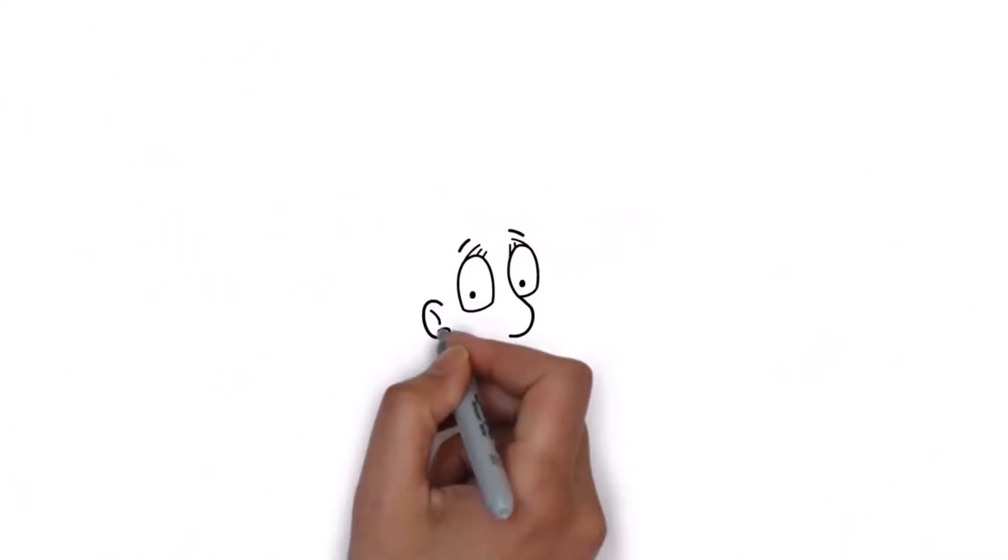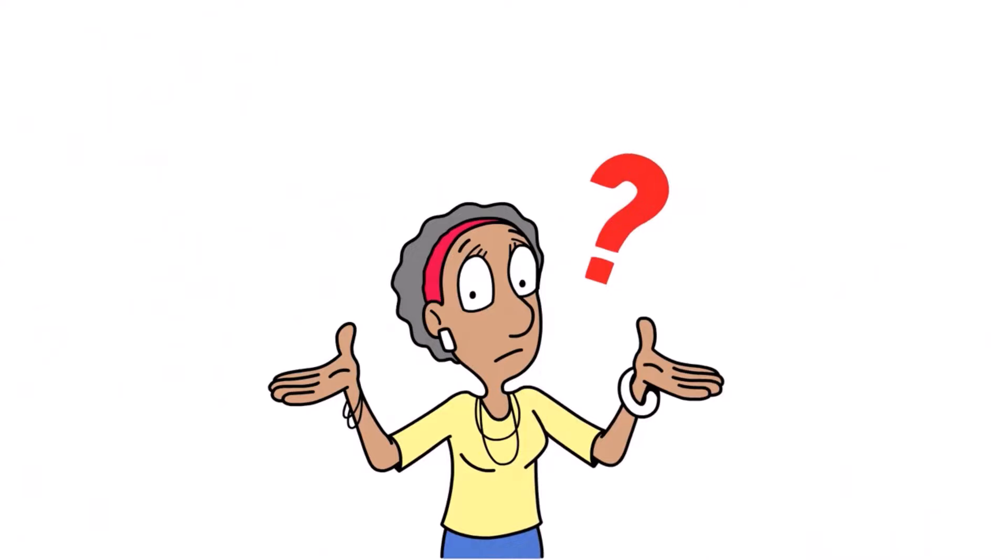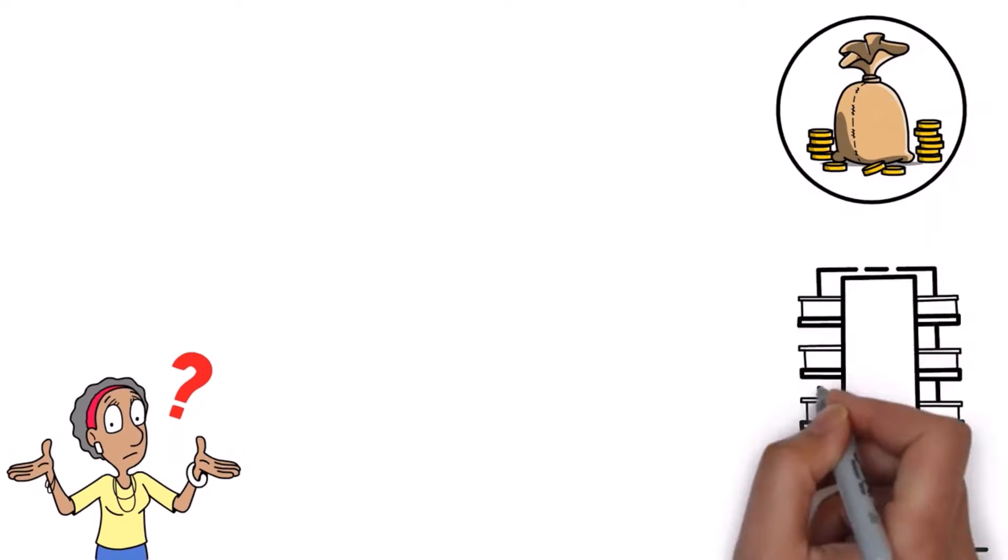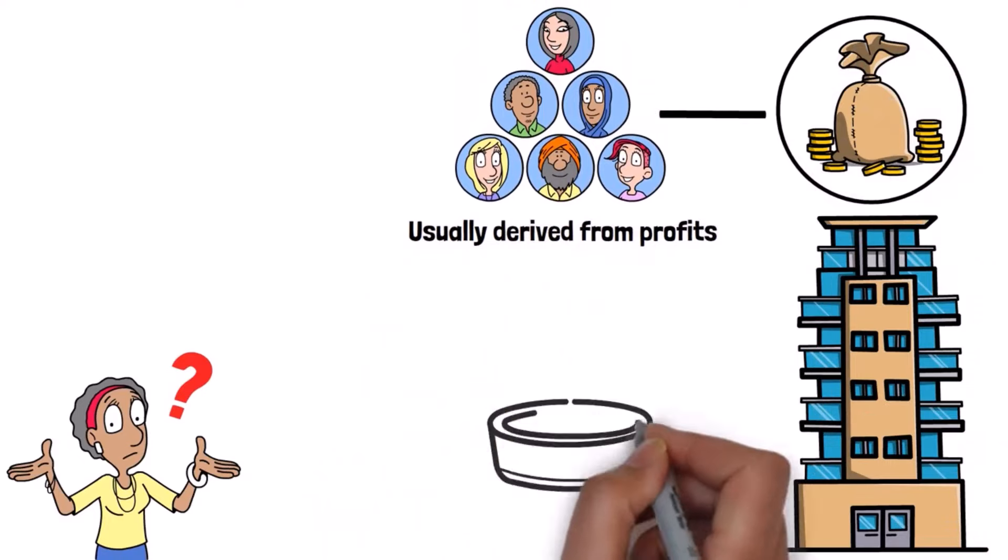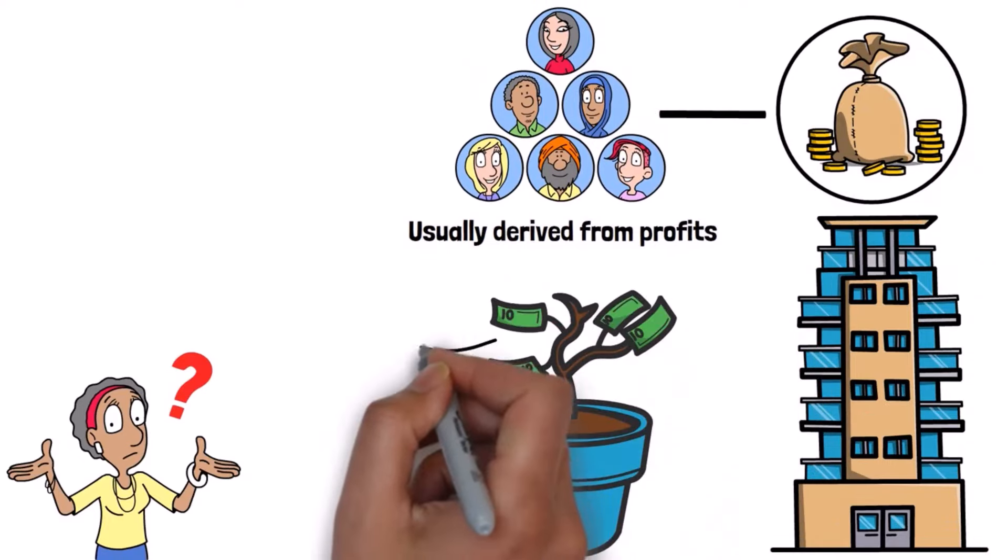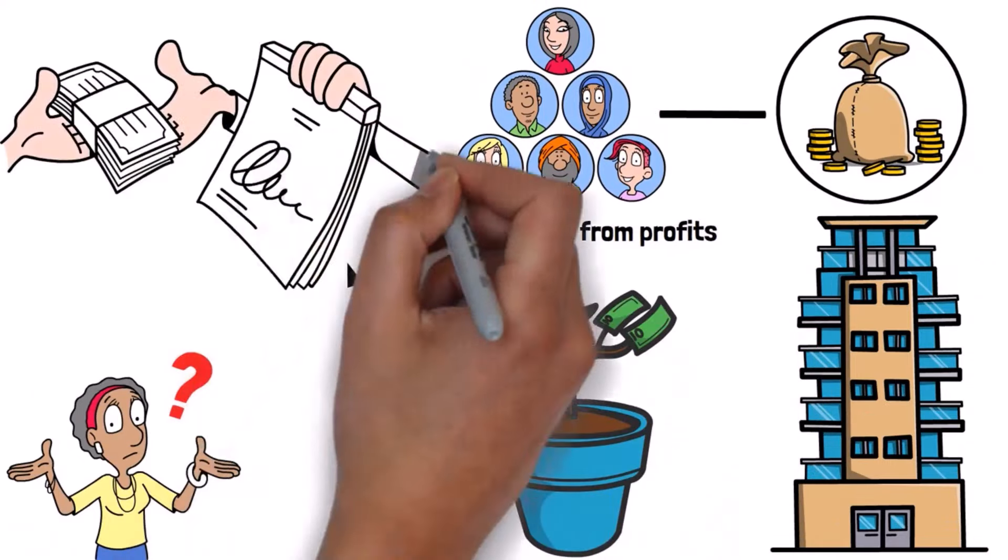First, let's talk about what dividends are. Dividends are payments made by a corporation to its shareholders, usually derived from profits. They can provide a reliable income stream, especially if you invest in stocks that pay dividends regularly.